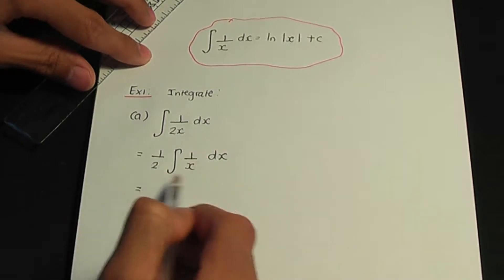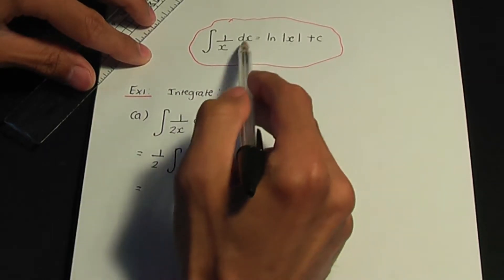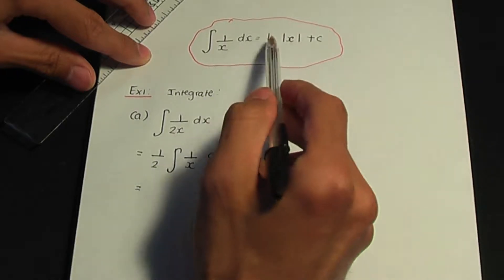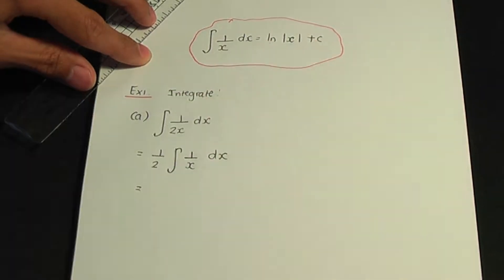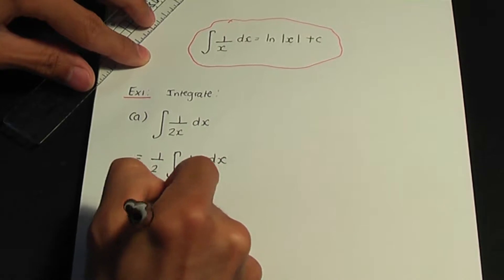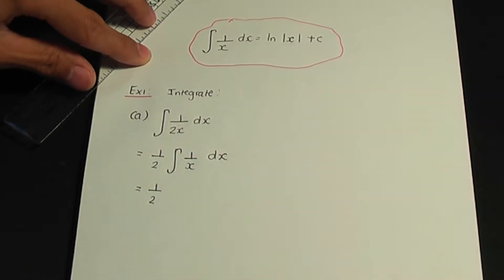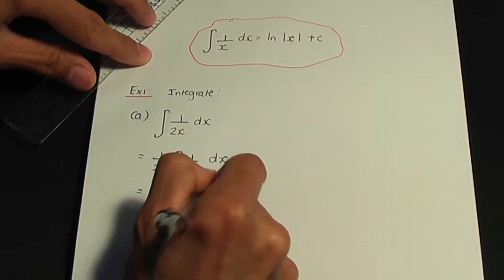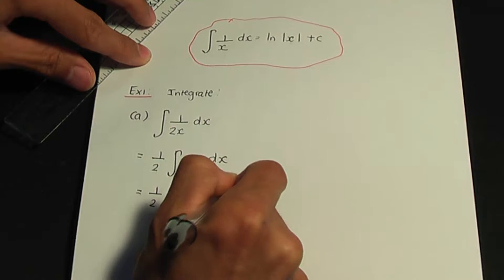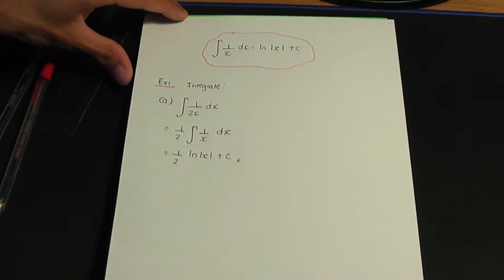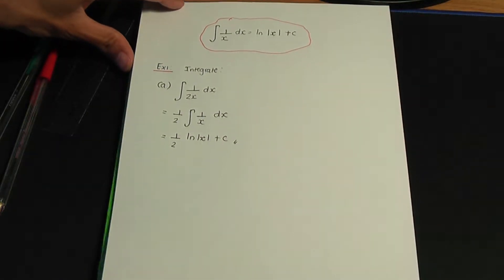Now we're able to use this standard result. The integral of 1 over x is ln the modulus of x plus c. So we're going to have one half times ln the modulus of x plus c. That should be your final answer for part a.